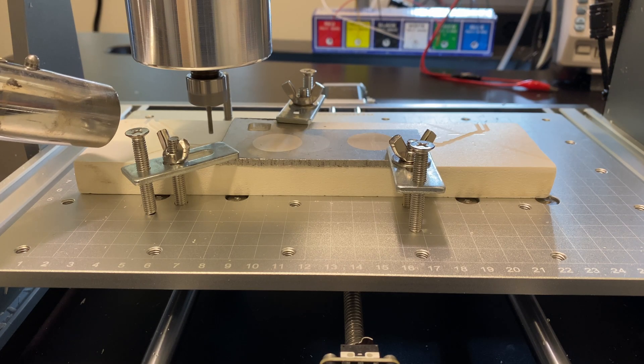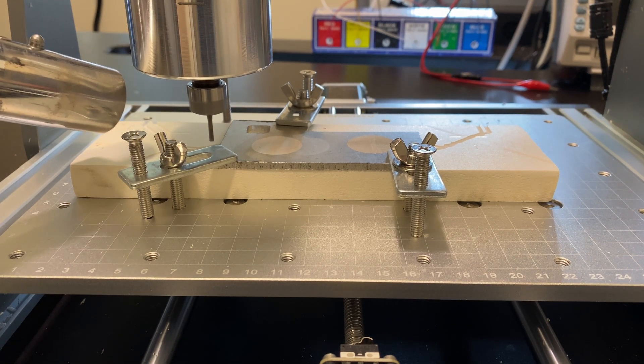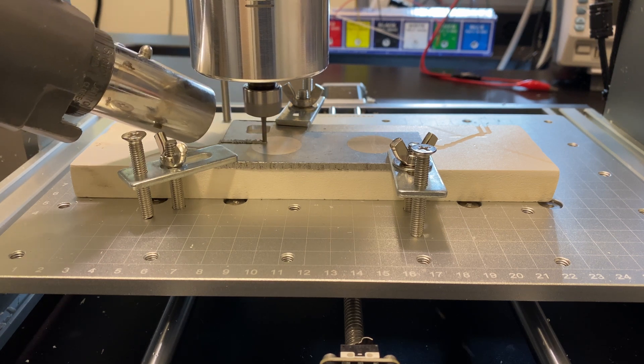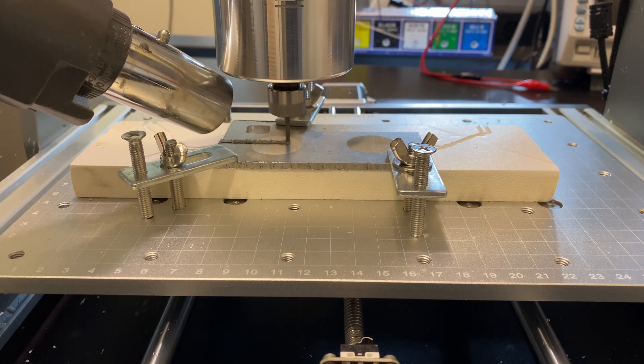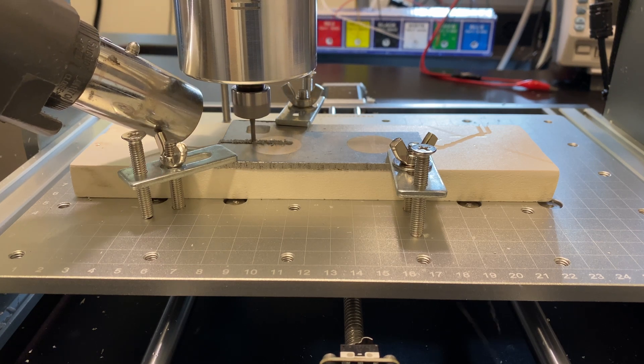However, this wouldn't be a proper review video without some stress tests, so let's try out a pocket operation. I did a first test with a 1mm depth of cut, 400mm per minute feed rate, and 28,000 rpm spindle speed. It didn't go so well because the slot got gummed up with chips.